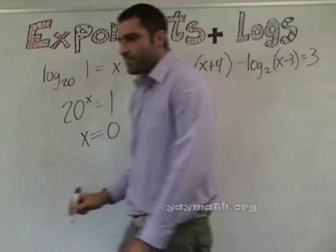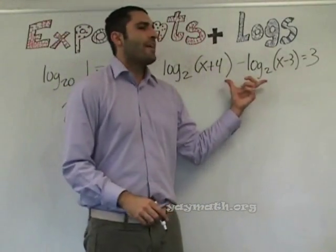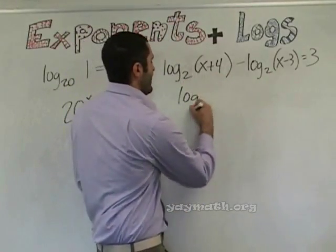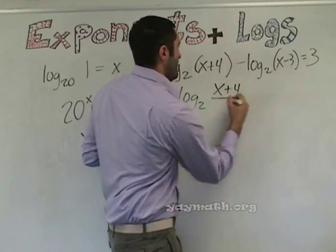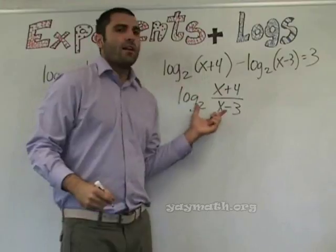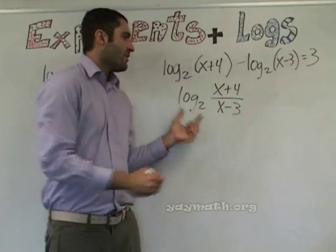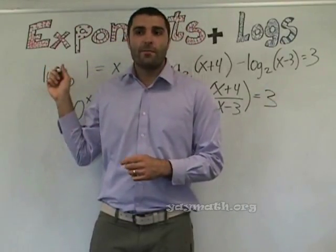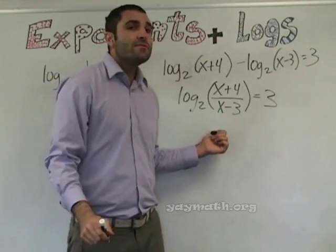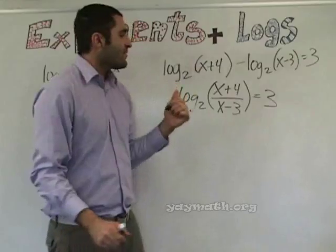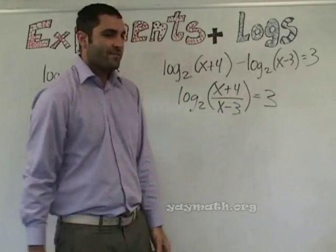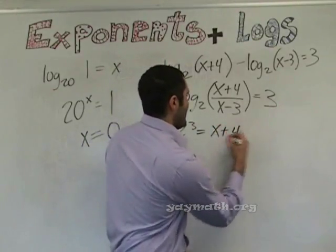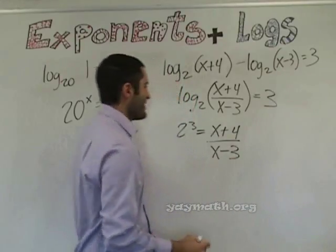Properties of logs. If we're subtracting two separate logs, what can we do? Divide into a single log — correct. This is the mistake that people make. They'll write log over log — this is not log over log, this is a single log of this number equals three. And we just did it in the last four problems, turning a log into an exponent. Let's turn this into an exponent: two to the third equals x plus four over x minus three.